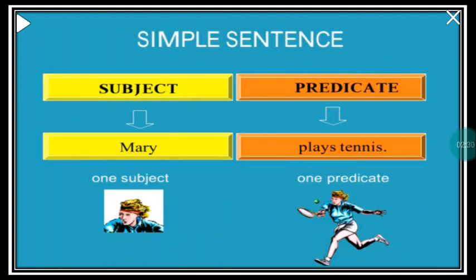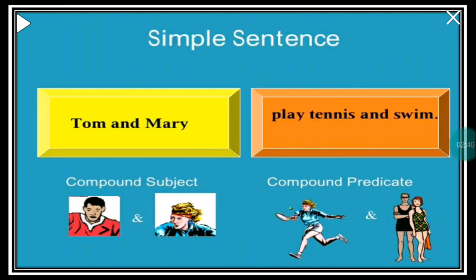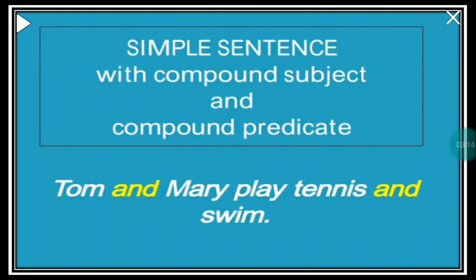Looking back at 'Mary plays tennis' — a simple sentence contains one subject and one predicate. Now, 'Tom and Mary play tennis and swim' is also a simple sentence. Here we have not a simple subject but a compound subject made up of Tom and Mary. 'Play tennis and swim' is a compound predicate — two different activities. A simple sentence can have a compound subject and compound predicate.